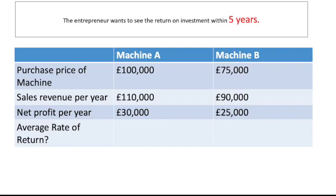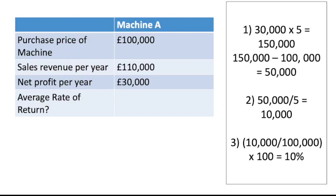Another way it might be shown: the entrepreneur wants to see the return on investment within five years, and we've got a net profit per year. All we'd simply do is $30,000 times by five, or $25,000 times by five, then take into account the purchase price of the machine. Machine A: $30,000 times five equals $150,000, minus the purchase price of $50,000, divided by five years equals $10,000 average annual profit, divided by $50,000 — that's 10%.